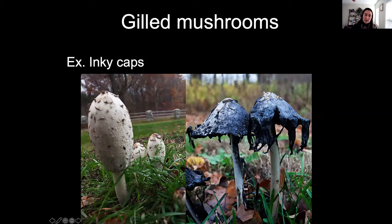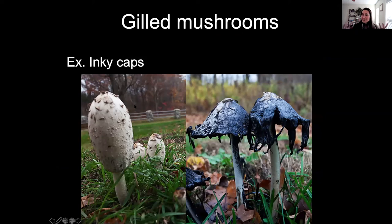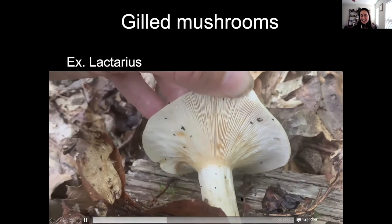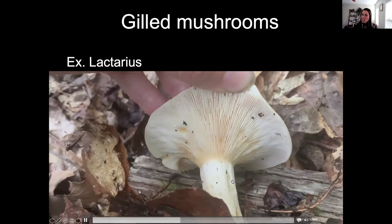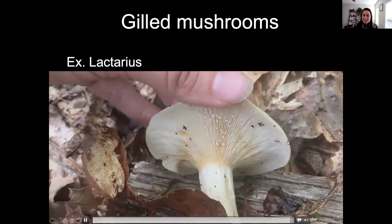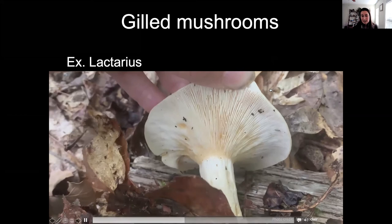Other common gilled mushrooms include inky caps. They might start out looking shaggy but then they deliquesce — a fabulous word meaning they melt — with black spores turning into a slimy inky mess very quickly. If you've seen these in a landscape, you know they can go from shaggy mushroom to inky mess in a very short period of time. Lactarius mushrooms produce that distinctive liquid when you break their gills; they have a chalky texture and crowded gills.